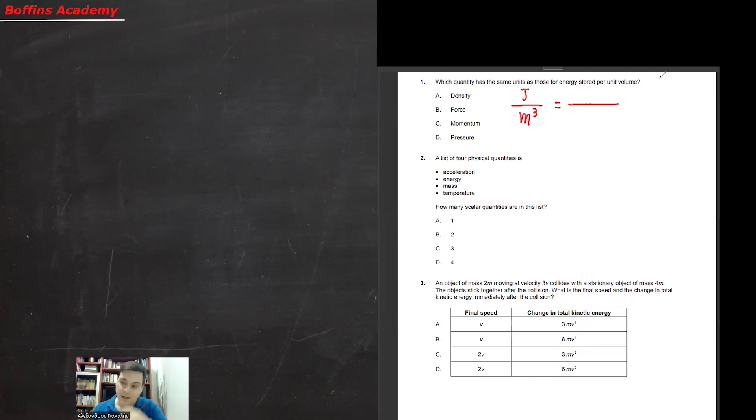We already know that since W, the work done on an object is F times X, which is newtons times meters in terms of units. And this is joules. We know that joules is equal to newtons times meters over cubic meters. We can simplify the meters with the cubic meters. Here you have to the power of 2. This is Newton over square meters.